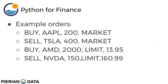So some example orders may look like this: you could say buy Apple 200 shares at the market price, or sell Tesla 400 shares at the market price. Or buy AMD 2,000 shares but keep the limit — you're not willing to pay more than $13.95. Or maybe you want to sell Nvidia stock 150 shares; however, you're not going to sell below $160.99.